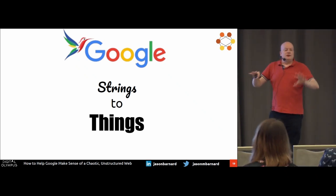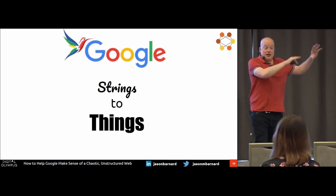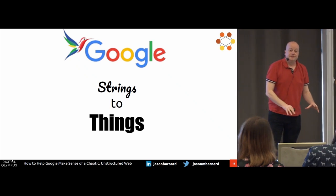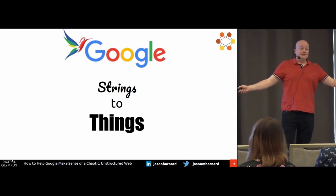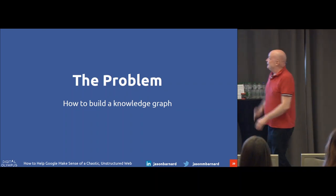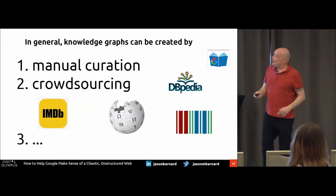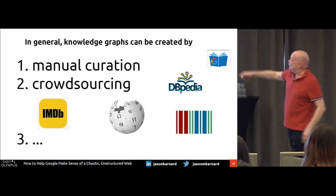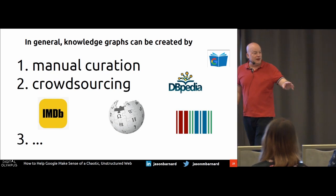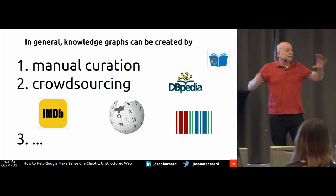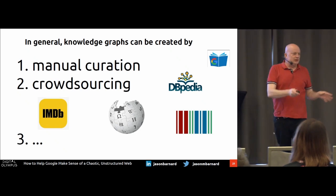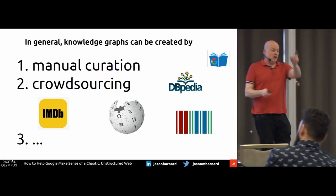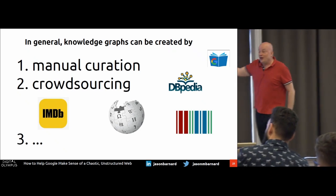Google wants to understand the world. It understands the world using a knowledge graph — a kind of encyclopedia for machines. The problem is how to build it. Manual creation, curation, crowdsourcing — it reads Wikipedia, gets facts. It looks in Wikidata, gets facts. It looks in IMDb — the movie database — gets facts. But human beings have had to build that, and that isn't scalable. Google cannot understand the world if it's asking everyone to check this information.